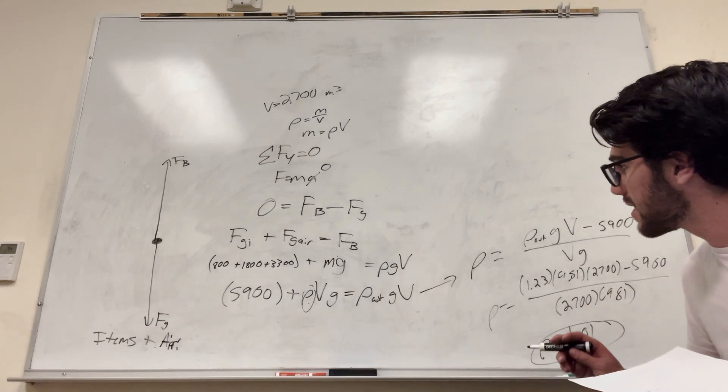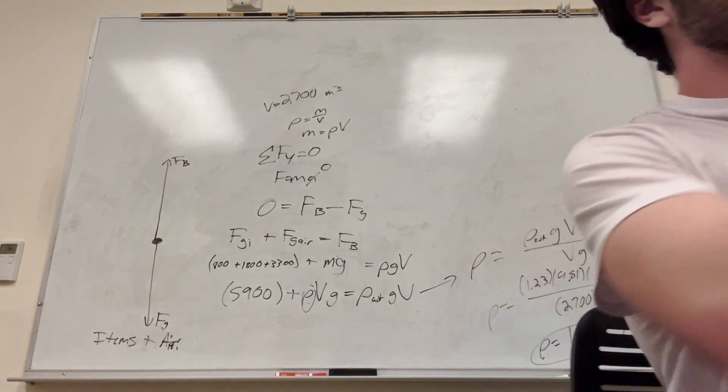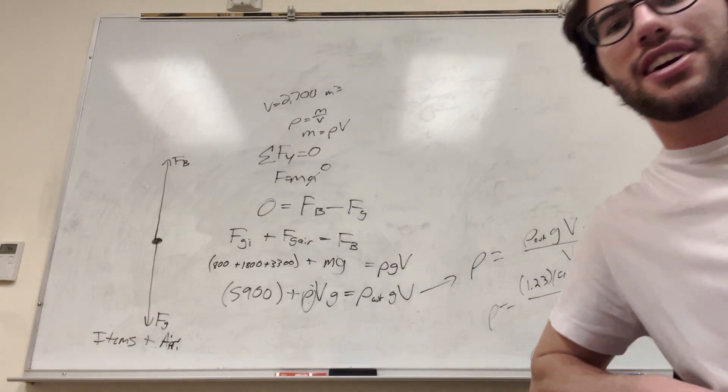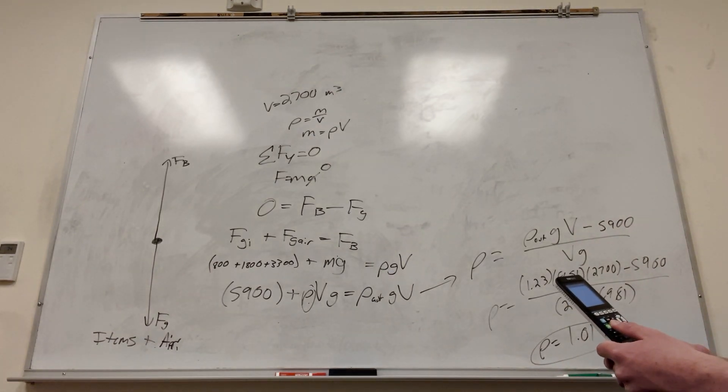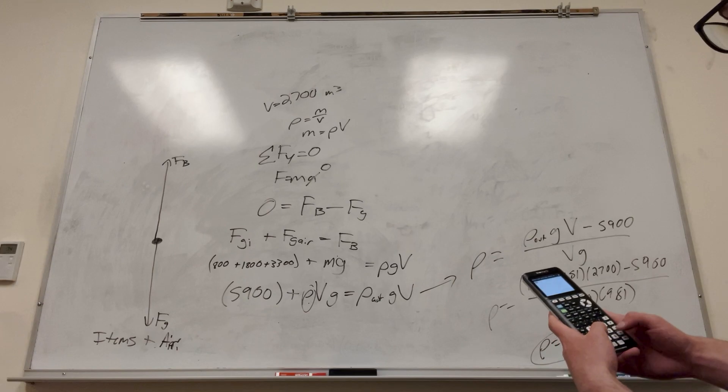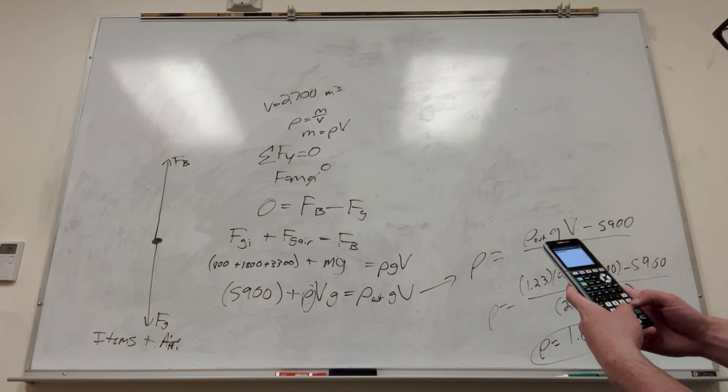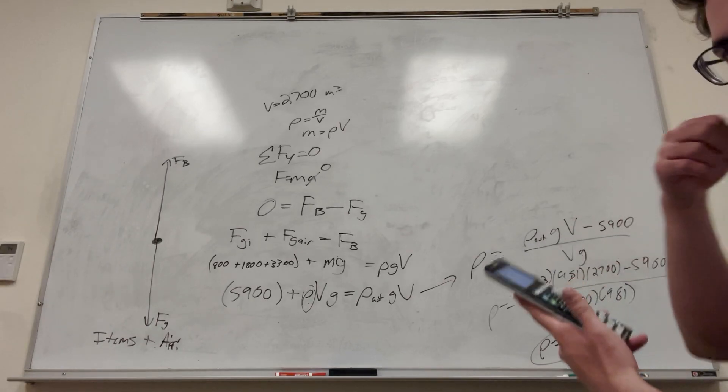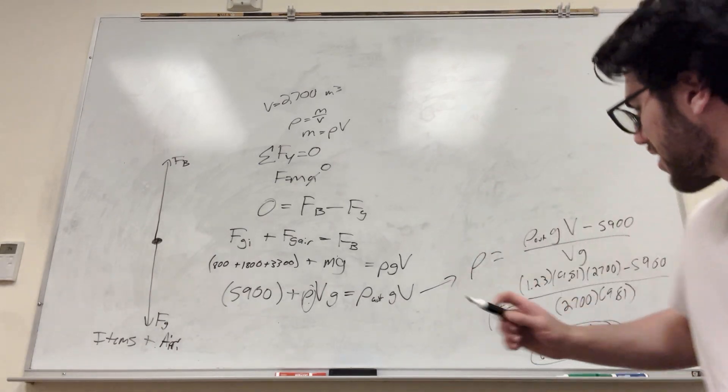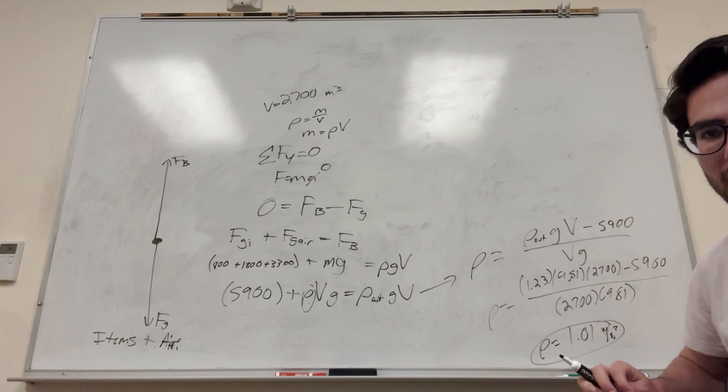There you go, and that is less than the density outside. So we kind of proofread our answer there. I'm going to go ahead while I talk and try to plug this into my calculator, because I solved it a little differently today than I did last time. So, yeah, you guys can watch me solve 1.23 times 9.81 times 2700 minus 5,900, or 2700 times 9.81. Yes. Nice job, mate. I forgot to write units, too. This kilogram per meter cubed, if you can read that.